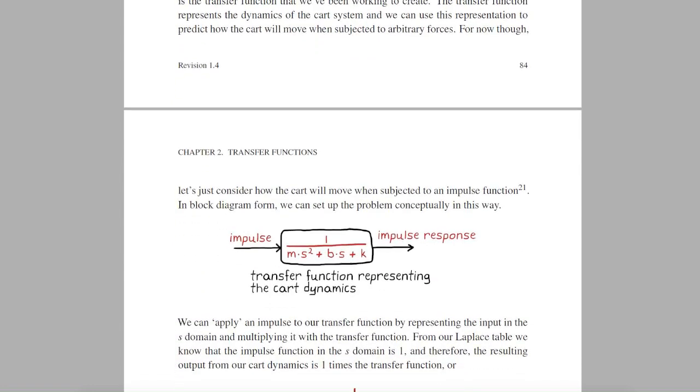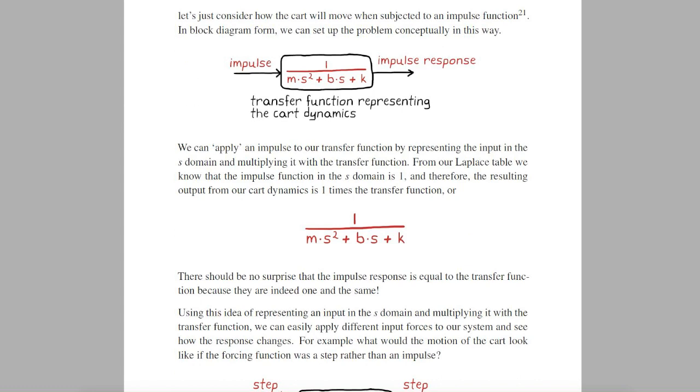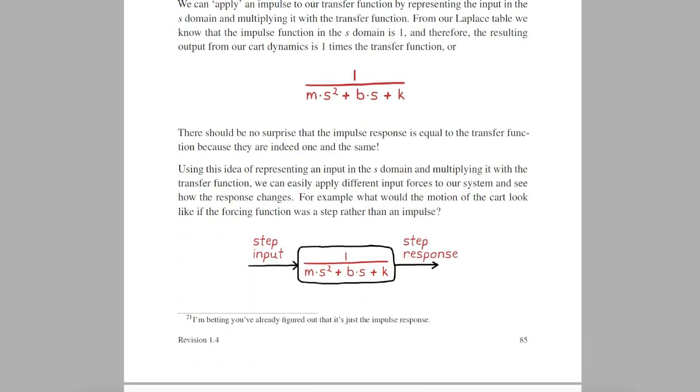Once you have your transfer function, we can apply different input functions to it to see how the system would respond. Just for fun, let's apply an impulse to our system. Well, the Laplace transform of an impulse is 1, so we just multiply our transfer function by 1 to get its response. It should be obvious that the impulse response is our transfer function because that's the definition of it.